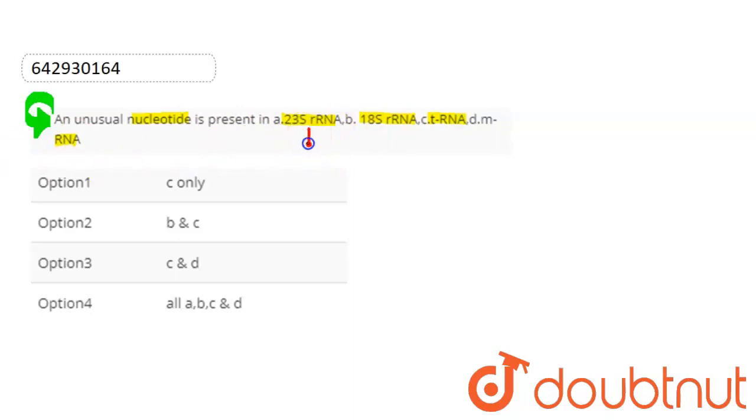First of all, 23S ribosomal RNA, if we talk about it, this is the catalytic center ribosome, and this is responsible for the peptide bond formation.